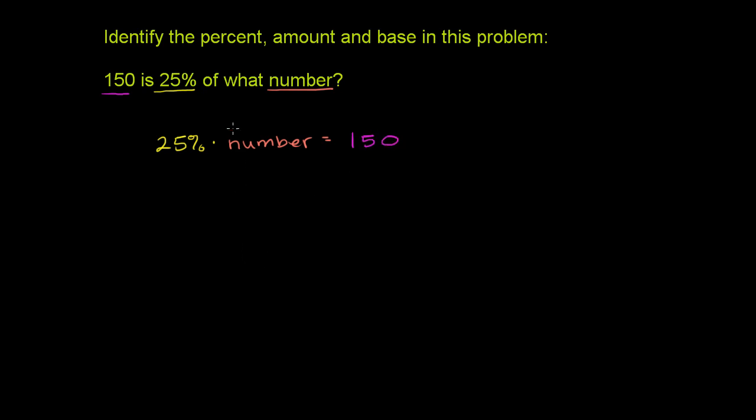So the percent is pretty easy to spot. We have 25% right over here. So this is going to be the percent. And we're multiplying the percent times some base number. So this right over here is the base. So we have the percent times the base is equal to some amount.